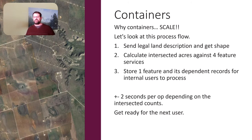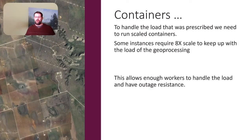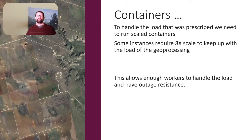Let's look at the container process flow. We send the legal description and get the shape, then calculate the intersected acres against four feature services. We store one feature and its dependent records for internal users and processes — this takes one to two seconds per operation depending on the intersected count. We let the next user come in for the next service and get ready quickly. We also use containers to handle prescribed load — some instances require eight-times scale, with eight processing workers to keep up with geoprocessing load. This allows enough workers to handle the load and also gives us huge outage resistance, since we cannot be down when people are paying money to file a mining claim.